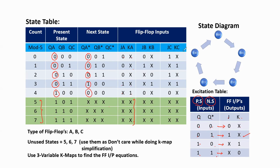Similarly, for JB and KB we look at QB and QB* values. For count 0: 0→0, giving JB=0, KB=don't care. For count 1: 0→1, giving JB=don't care, KB=don't care. For count 2: 1→1, giving JB=don't care, KB=don't care. For count 3: 1→0, giving JB=don't care, KB=1. For count 4: 0→0, giving JB=0, KB=don't care. For JC and KC, similarly we fill the values based on QC and QC* transitions. The remaining unused states are all don't cares. This completes the state table.